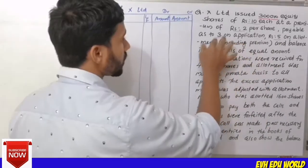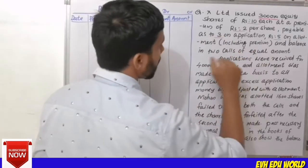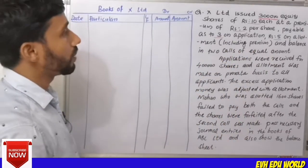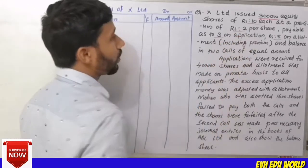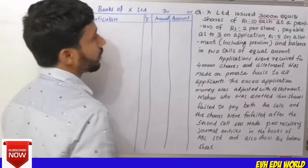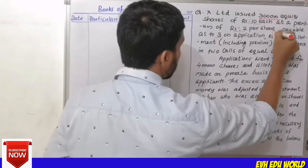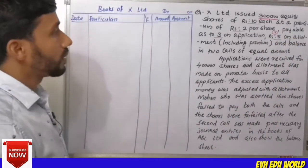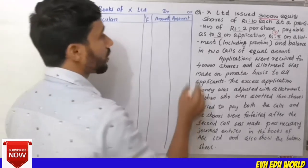Application is Rs.3 per share. Allotment is Rs.5 per share — that includes the Rs.2 premium. So in allotment, Rs.3 is the share amount and Rs.2 is the premium. Then the balance in two calls.